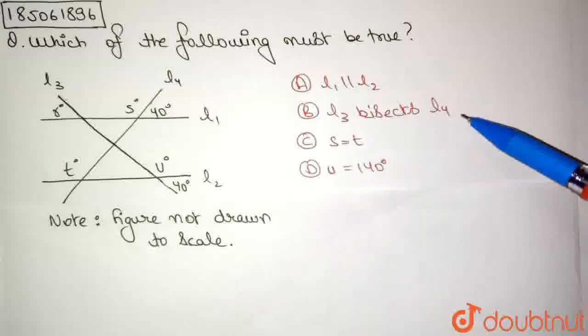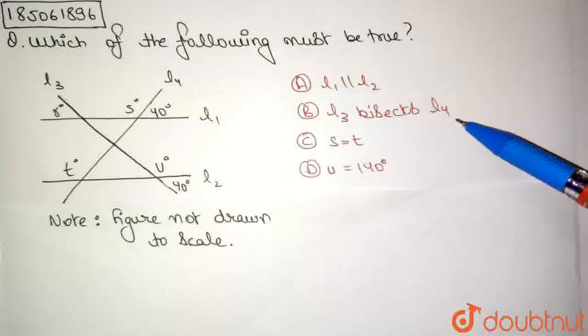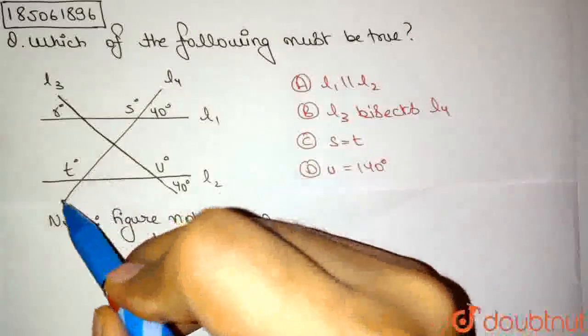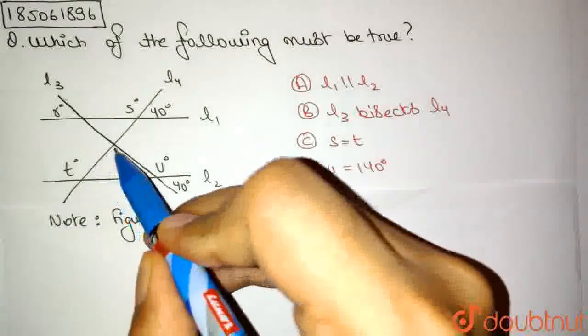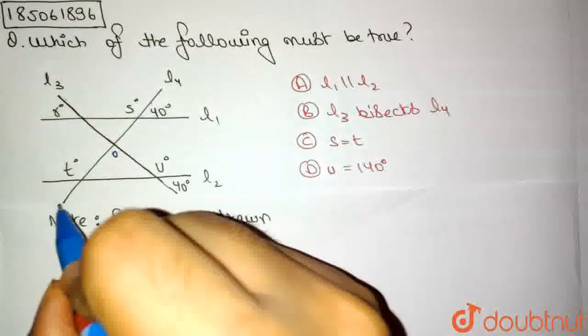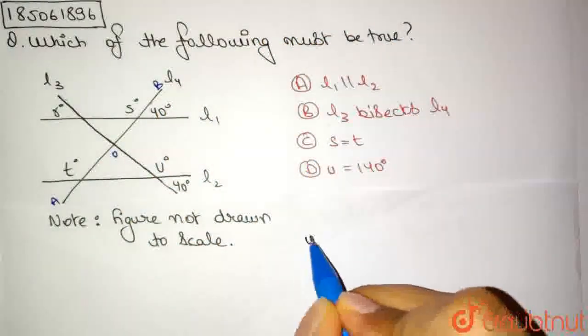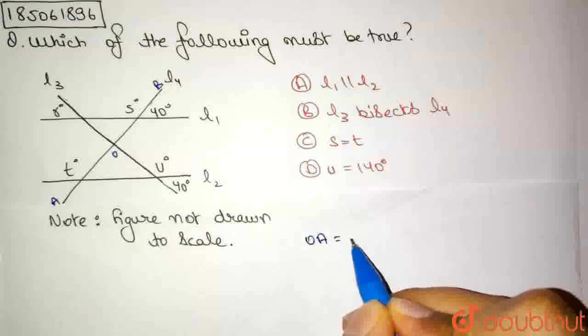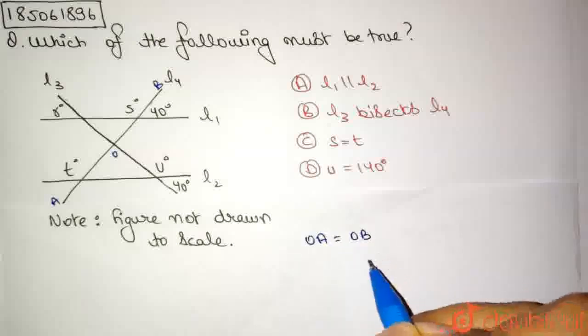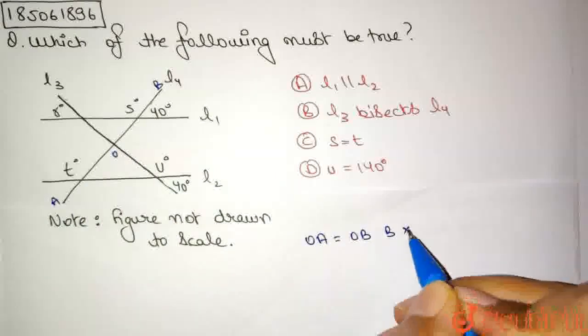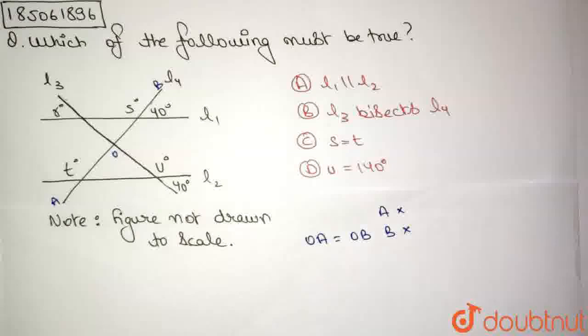Option B says L3 bisects L4. Bisects means dividing into two equal parts. So if L3 bisects L4, and I call this point O, this A, and this B, then it simply means that OA should be equal to OB. But we have not been given any such information, so option B is also not possible. A is not true, B is also not true.